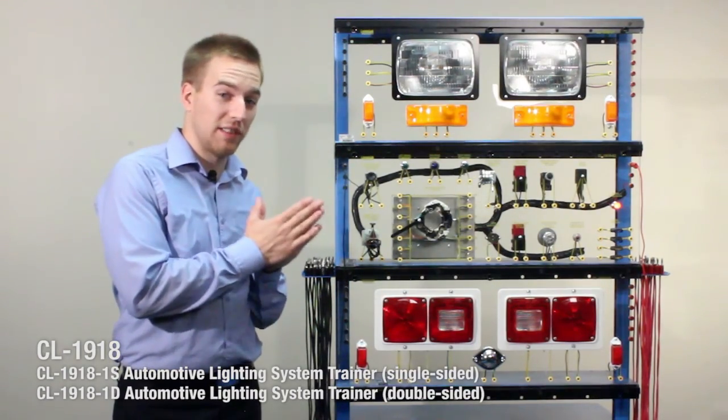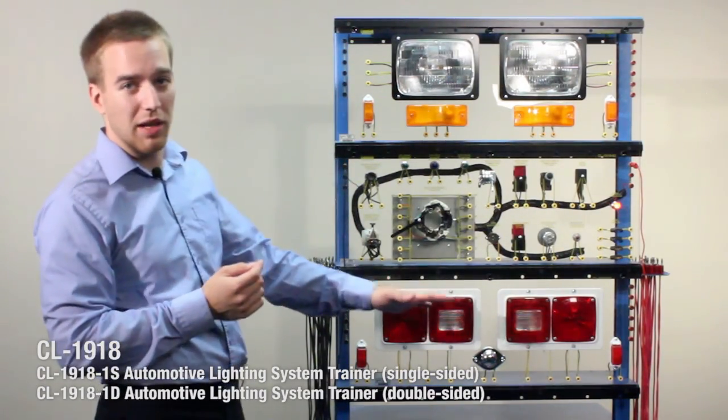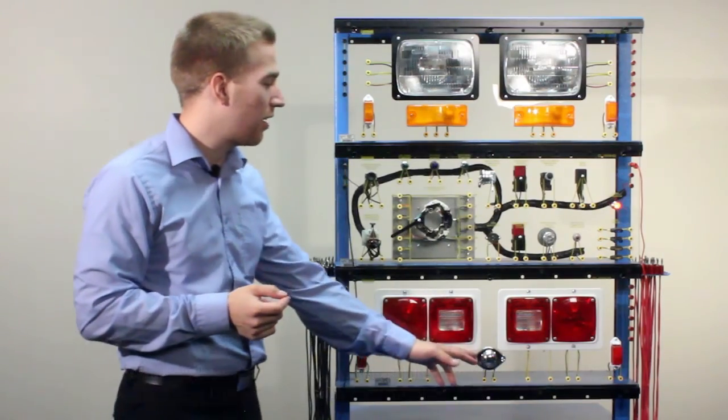On the Automotive Lighting Systems Trainer we have headlights, turn signals, side markers, tail lights, brake lights and side markers as well as the license plate.